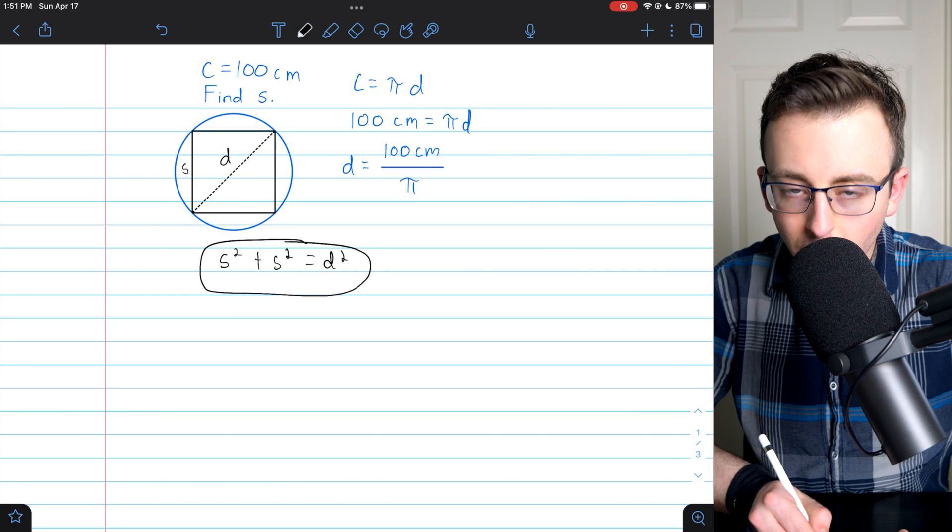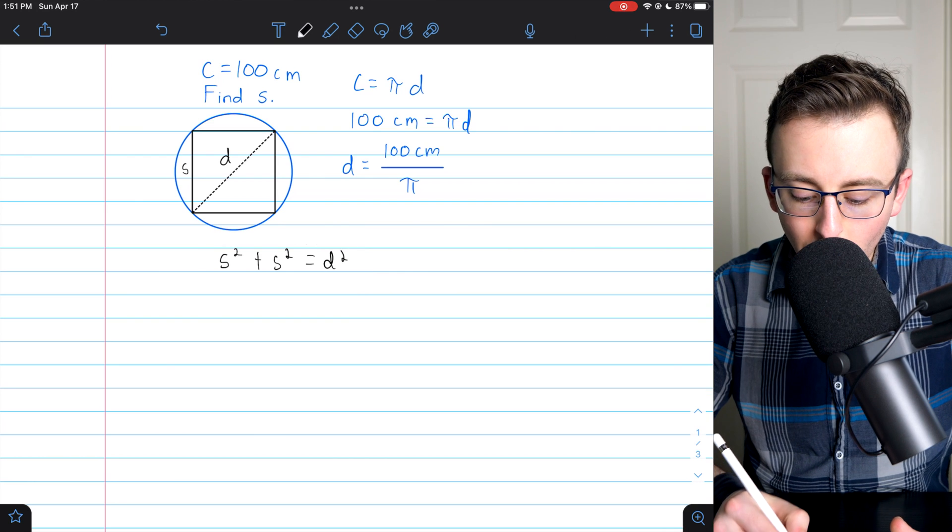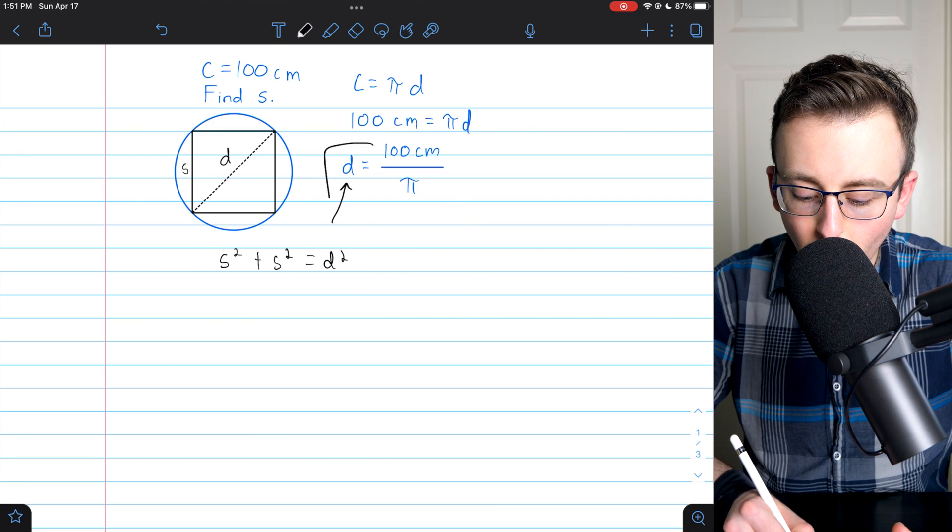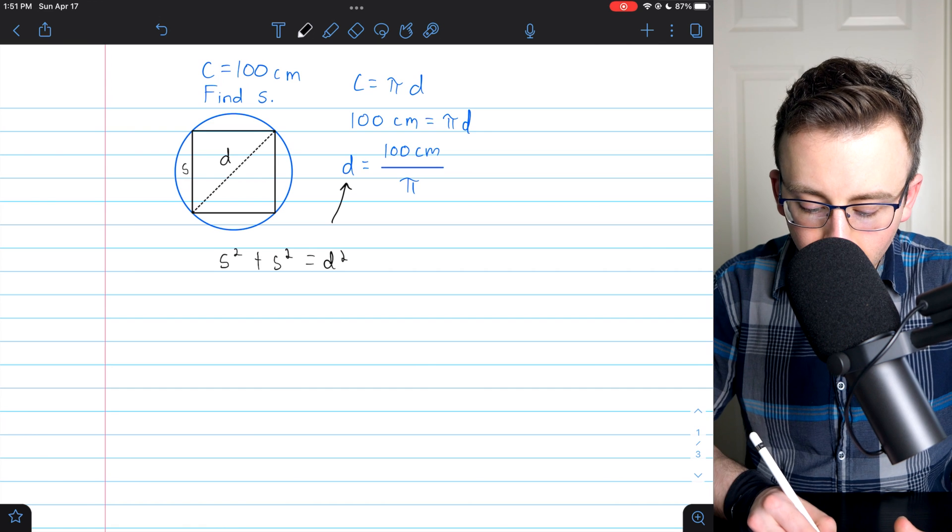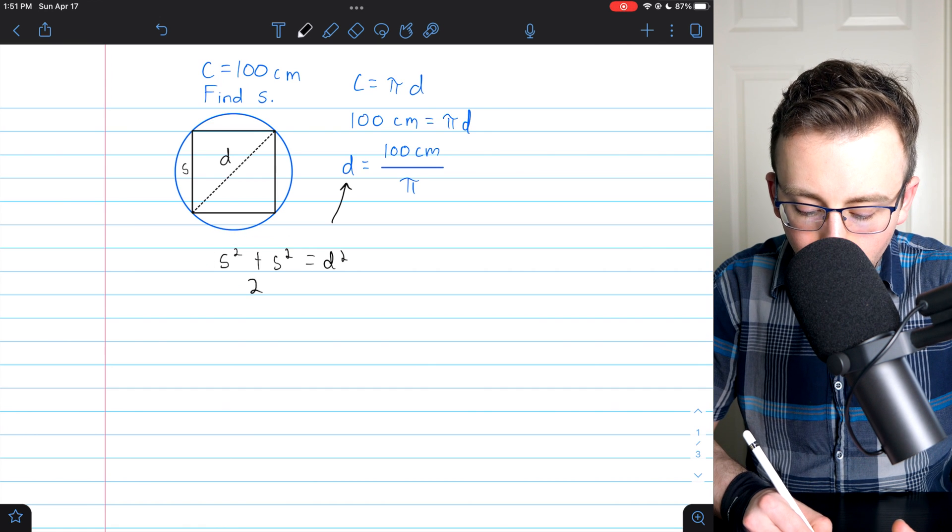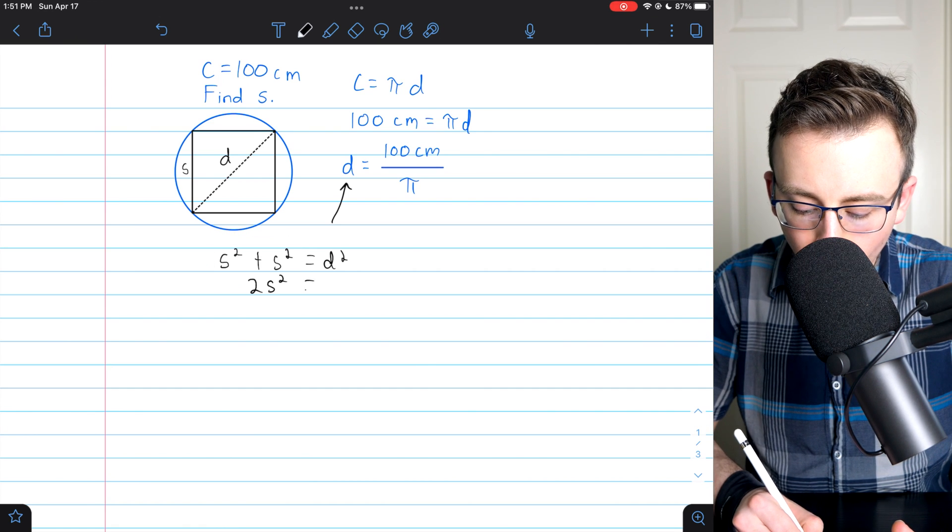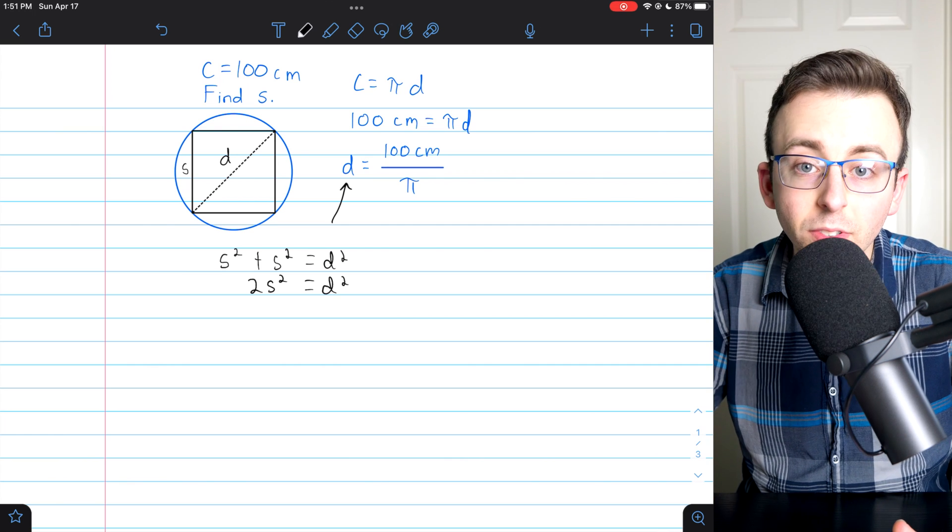Now, let's solve this equation for d and plug what we get back into the equation for the circle's diameter. So s squared plus s squared, that of course, is 2s squared. So 2s squared equals d squared.